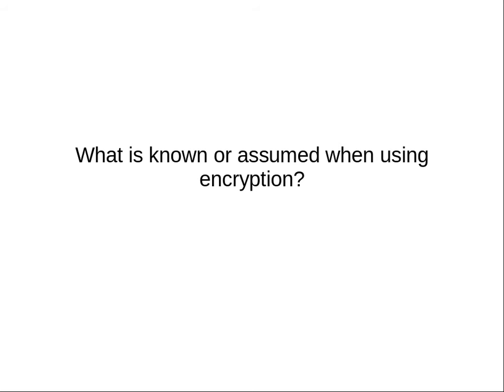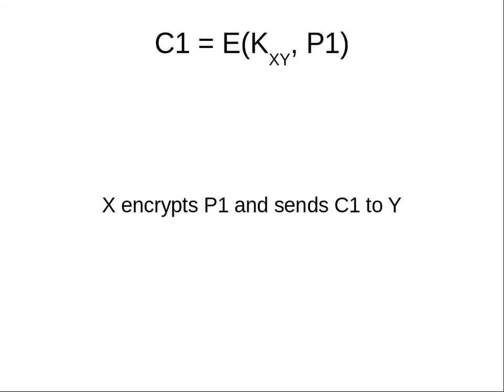For example, when we encrypt some plain text P1 with a symmetric key cipher, where we have a key K shared between two users X and Y, we get some cipher text denoted as C1. So just remember the notation: E is the encrypt function, which takes two inputs — a key and a message or plain text, denoted P1. Remember there are two types of encryption: shared secret key (symmetric key) encryption, and public key encryption.